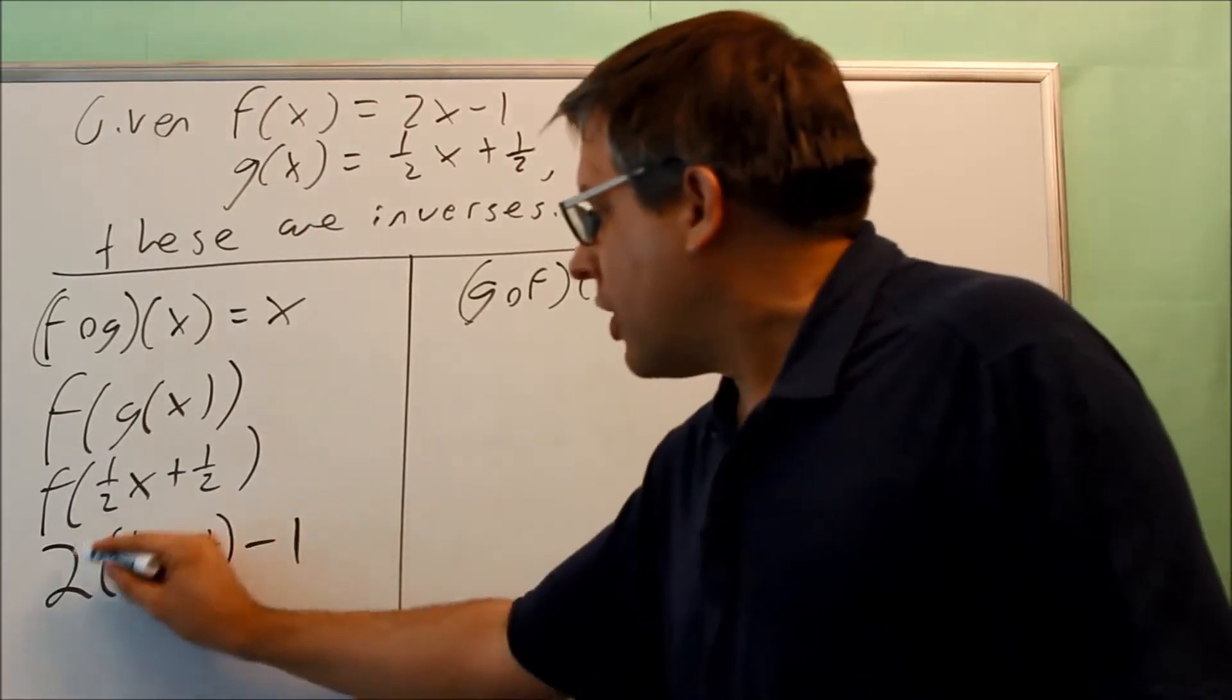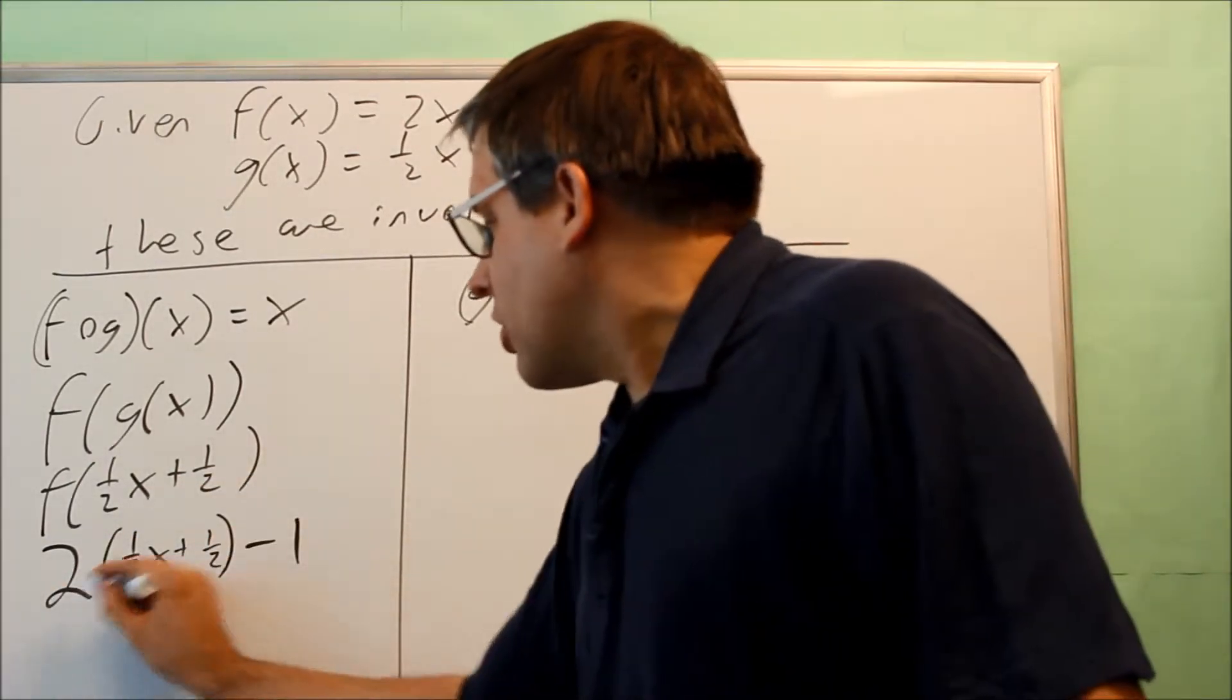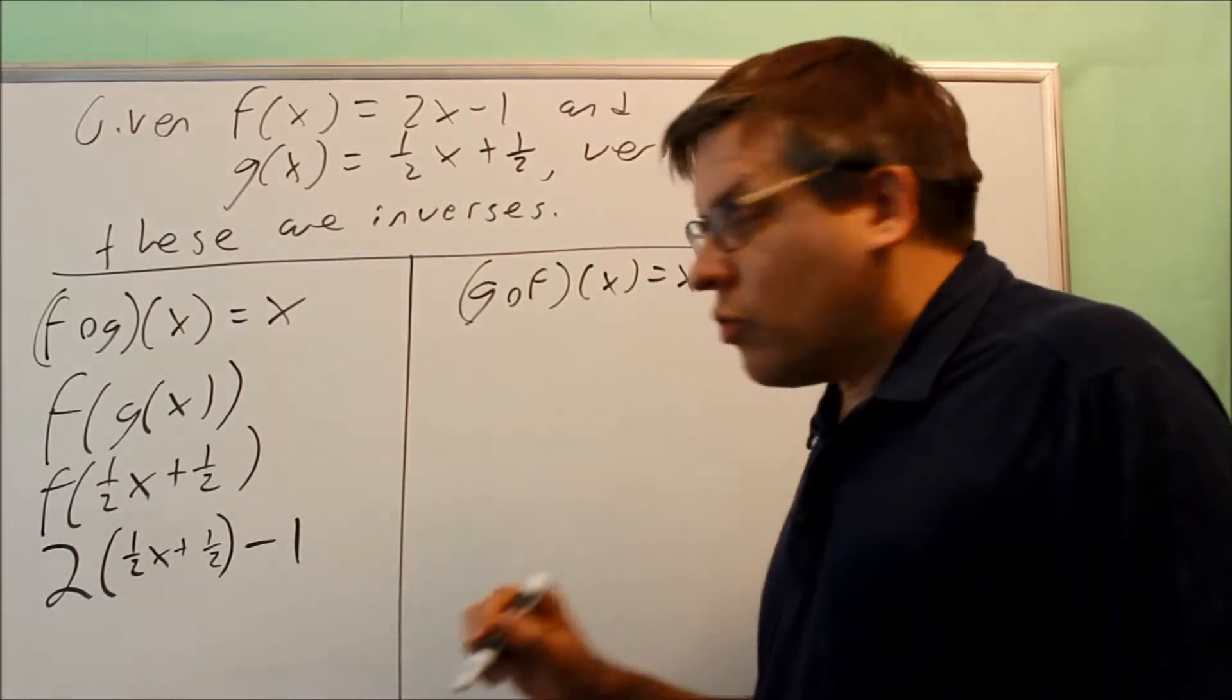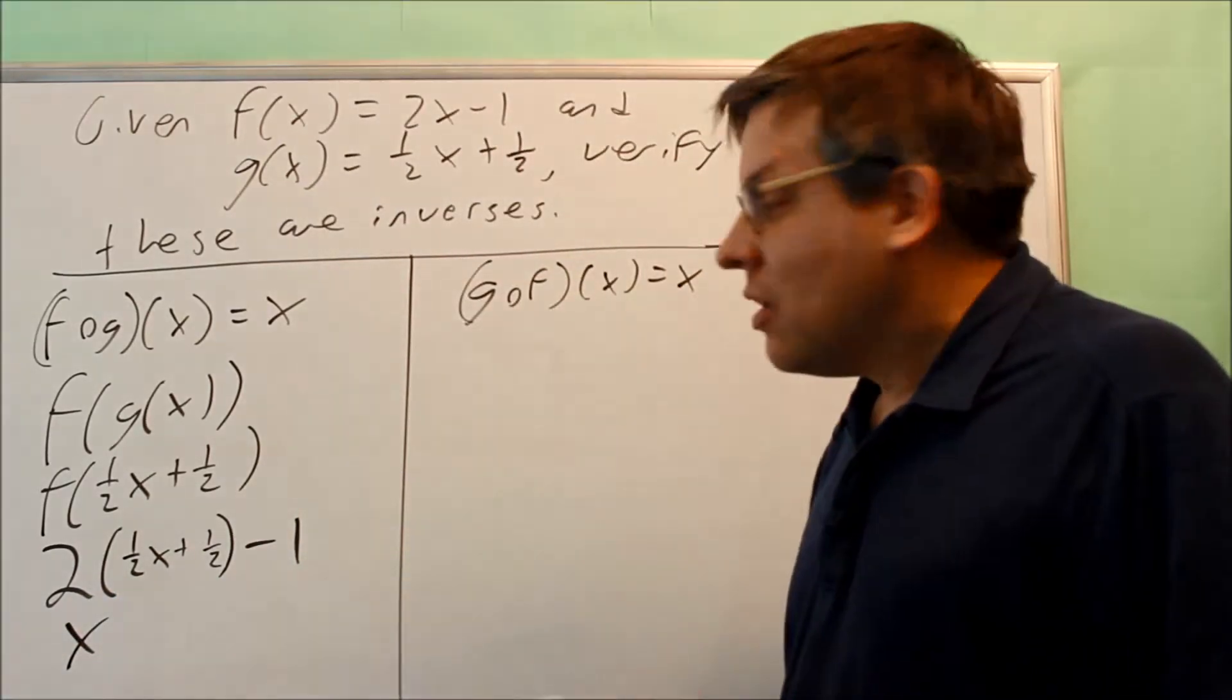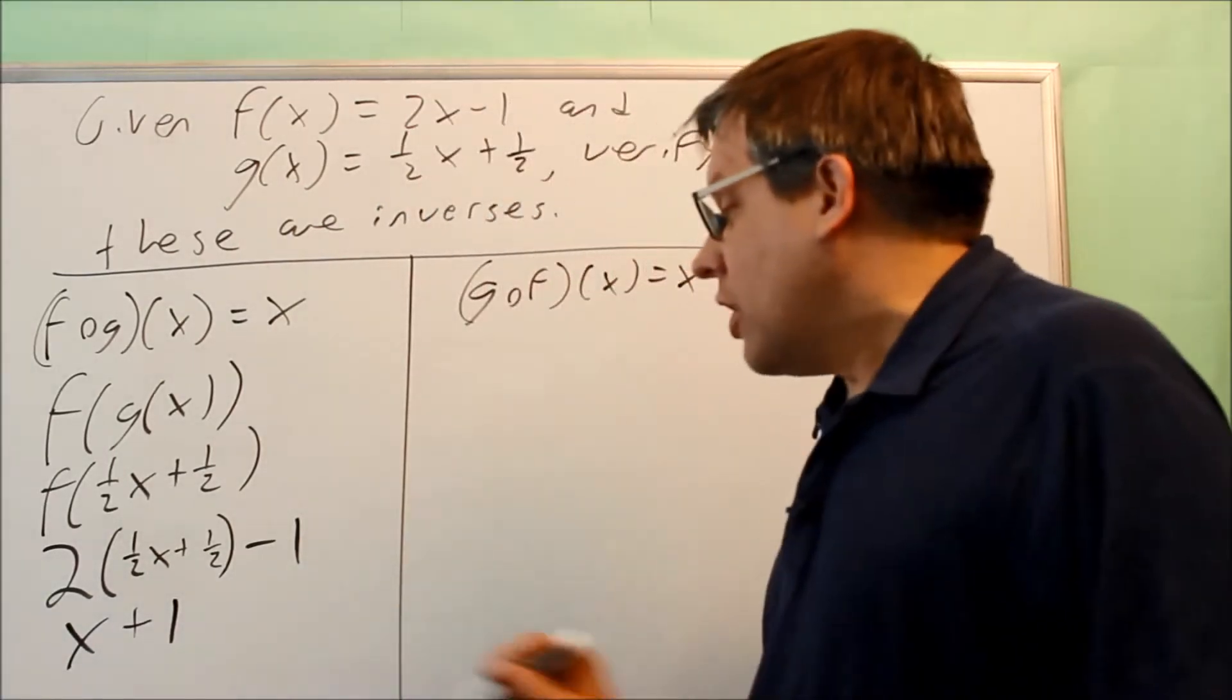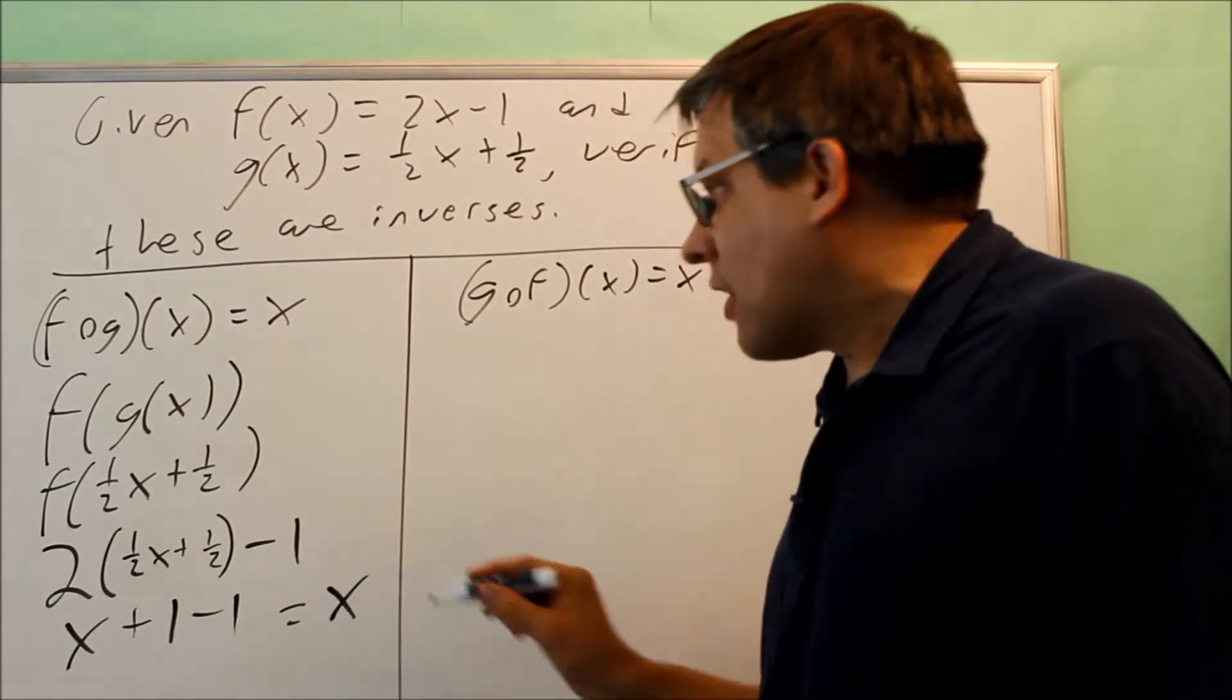So now I want to multiply each of these by two. So I have two, this is really two over one times one-half. Everything cancels and you get a one when you do that. So two times a half is just x. Two times a half gives you plus one, and then you have minus one also. But when you simplify that, you get x.